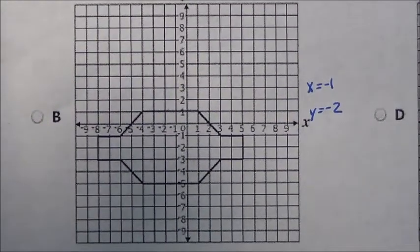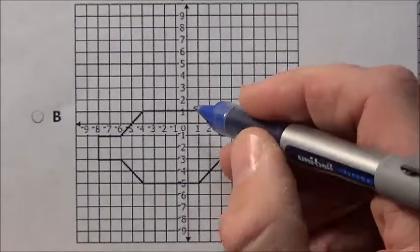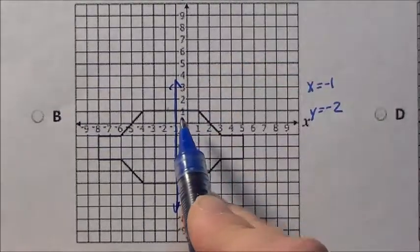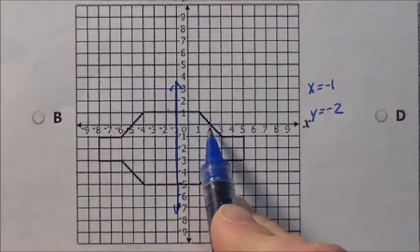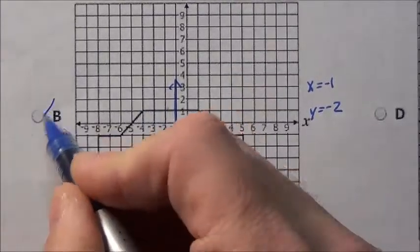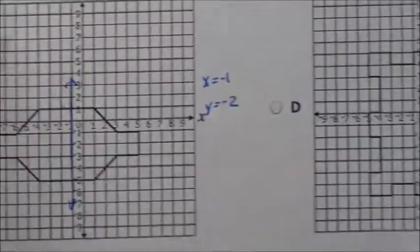Here is option B. X equals negative 1, so we draw right at x equals negative 1. Right off I notice this is 1, 2 away before it starts bending. This is 1, 2, 3 away before it starts bending. That's going to cross out right there. X equals negative 1, that vertical line is not going to work.